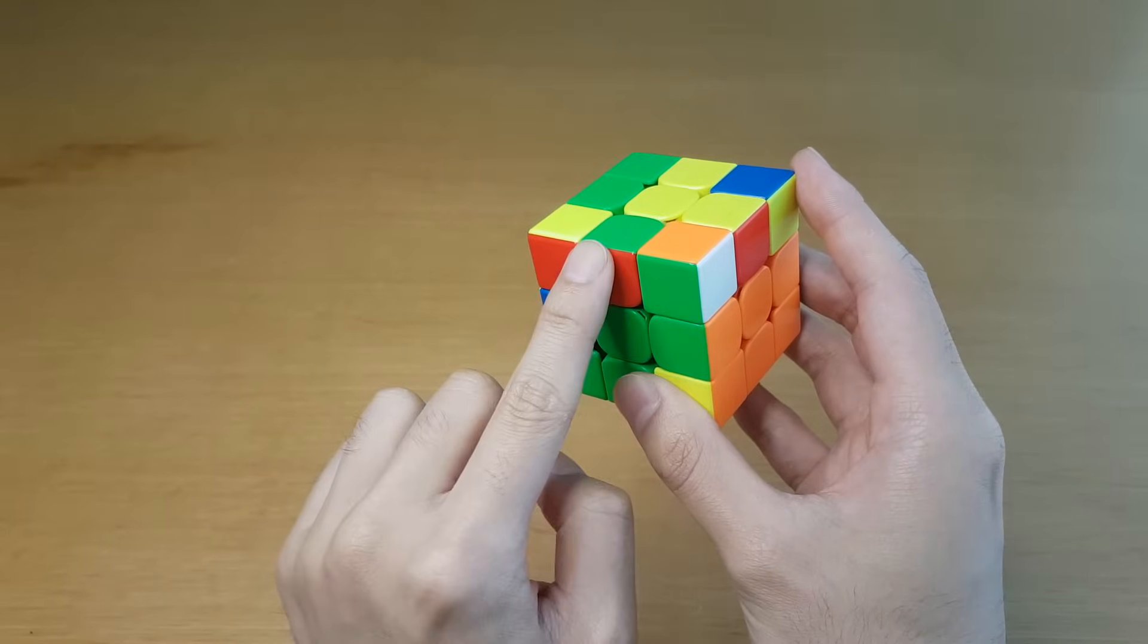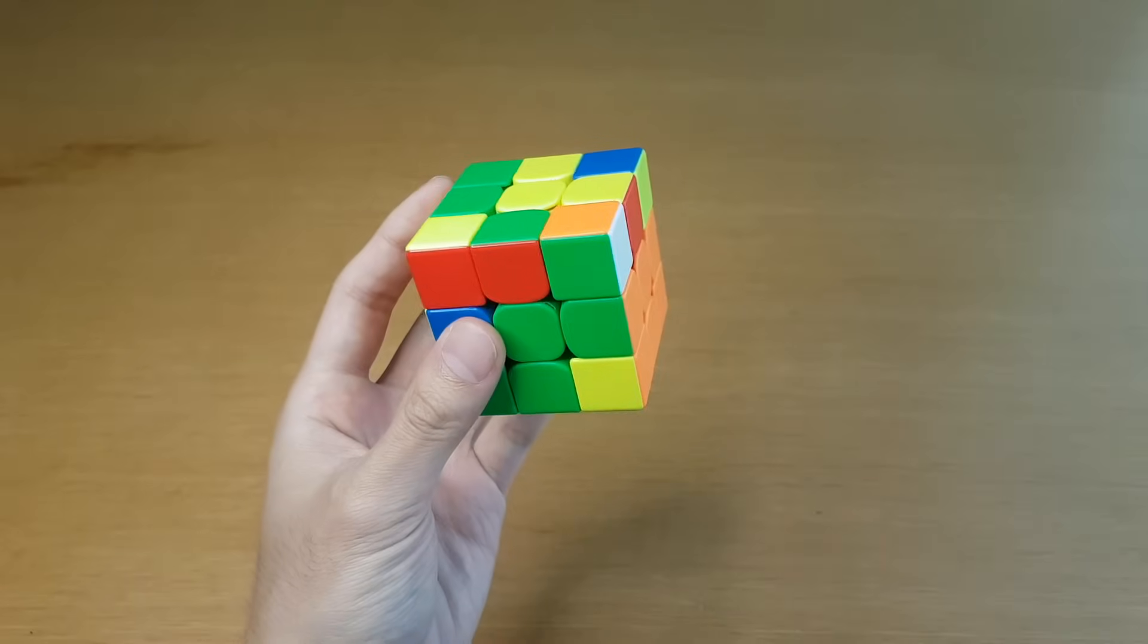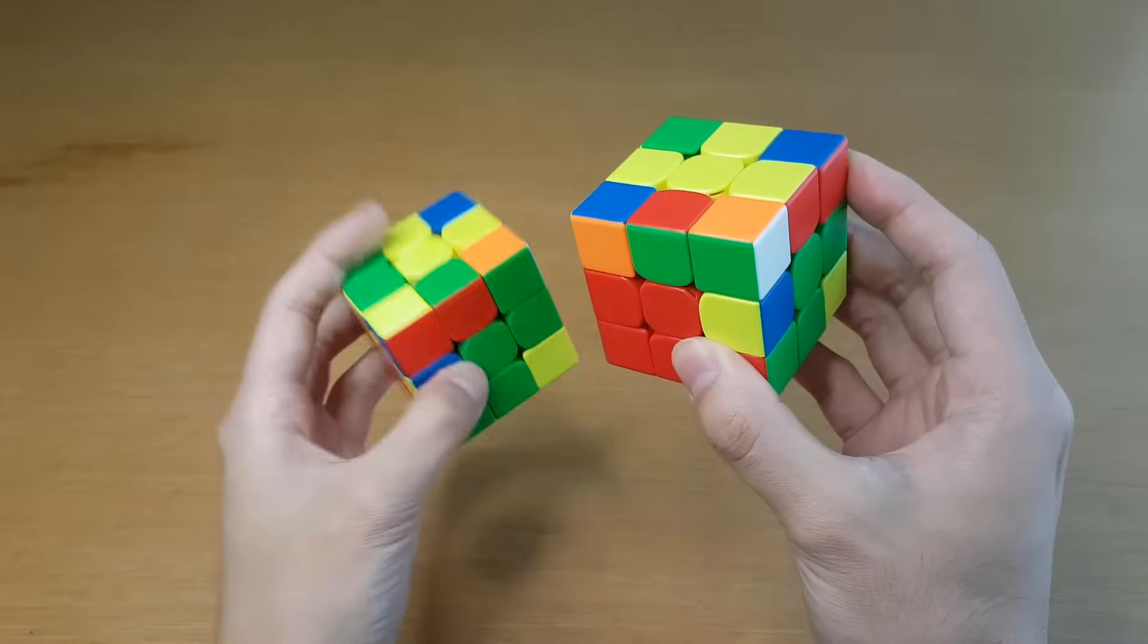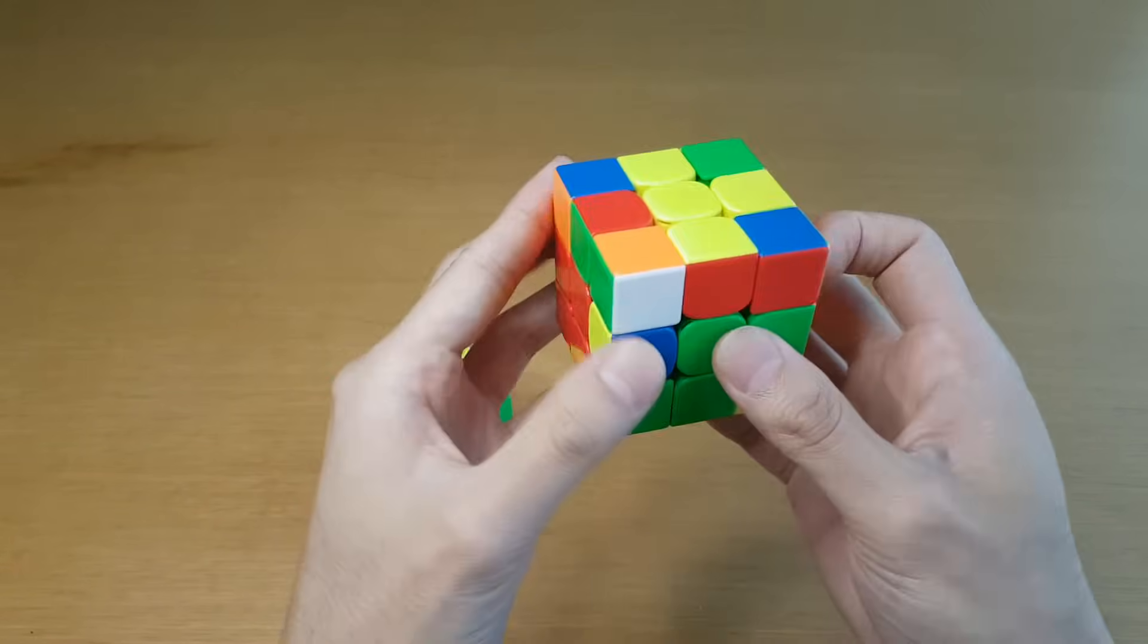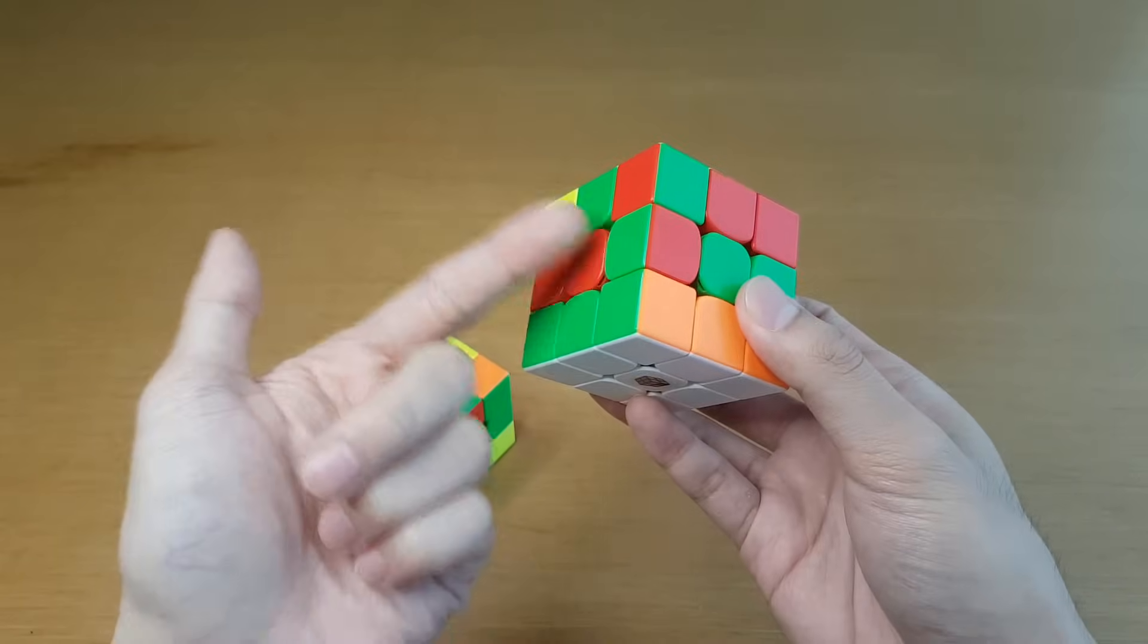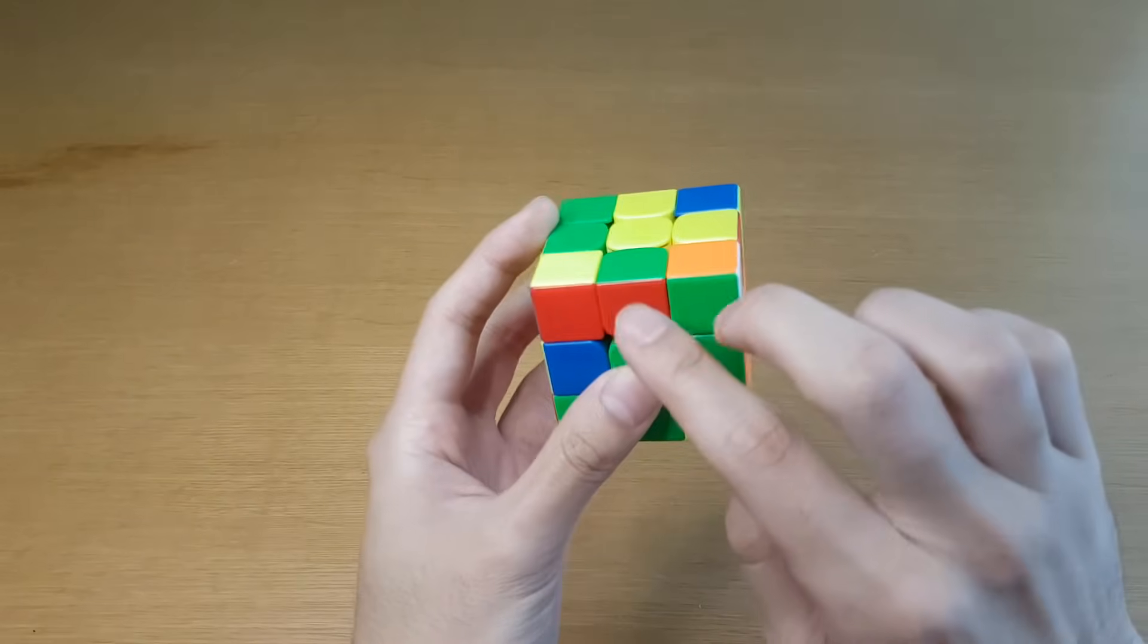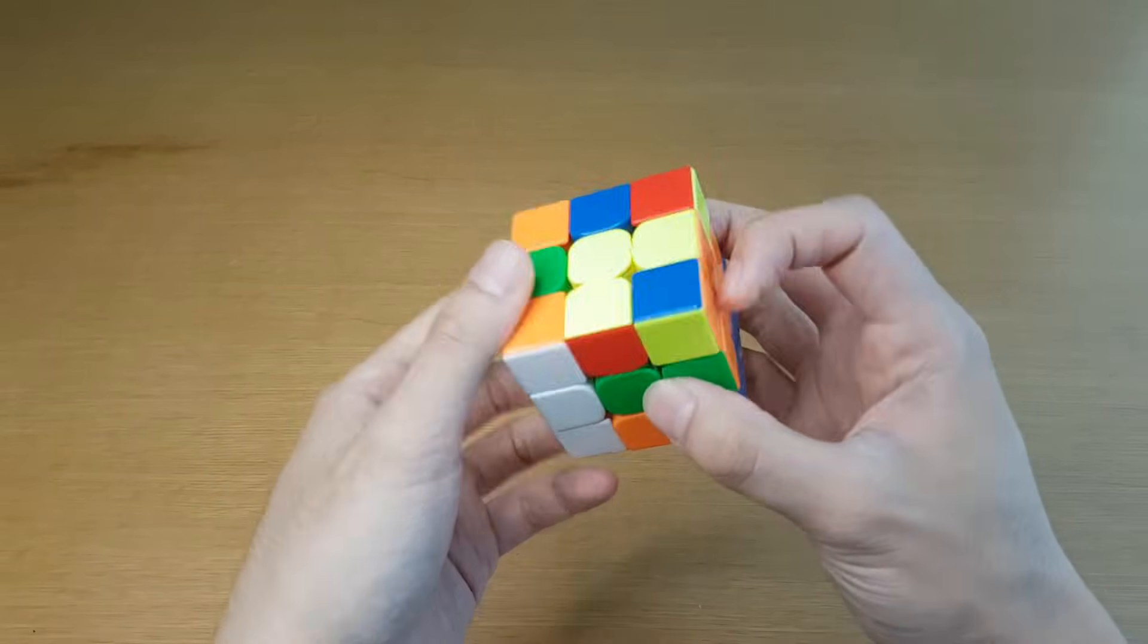First we have to talk about how to recognize pseudo-slotting cases. So we have the corner and the edge up here, and the colors don't really match, so it seems like what we actually want is something like this, where the colors do match. The problem though is that is incorrect, and if you tried to insert this as a pseudo-slot, you would just get a flipped edge.